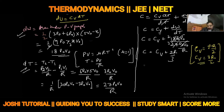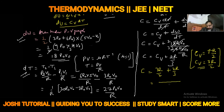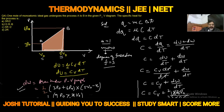Putting Cv = 3R/2 into the expression, specific heat C = 3R/2 + 2R/3. Taking LCM of 6: C = 9R/6 + 4R/6 = 13R/6. So the specific heat for this process is 13R/6, and the correct option is B.